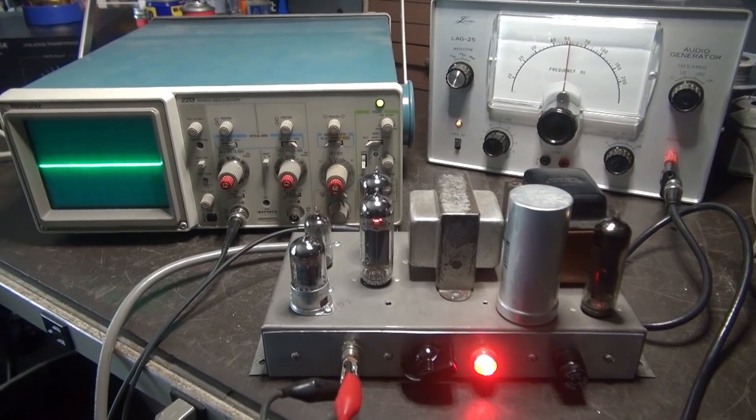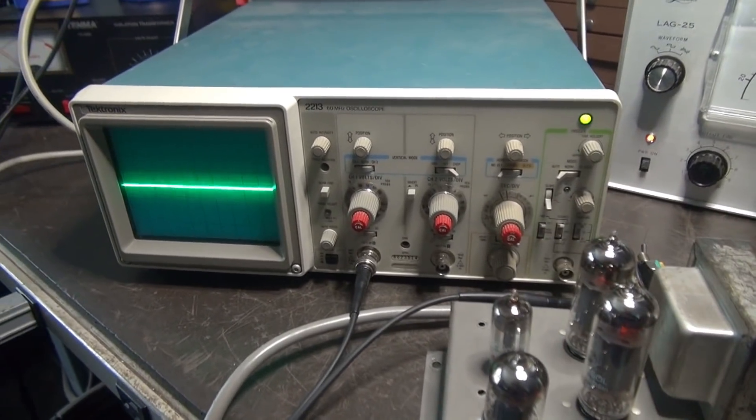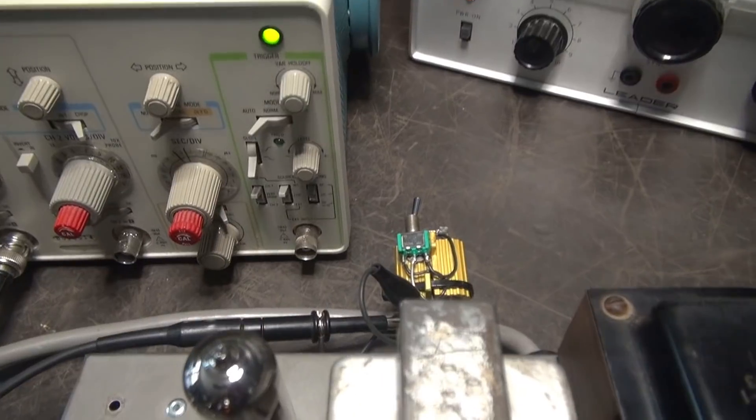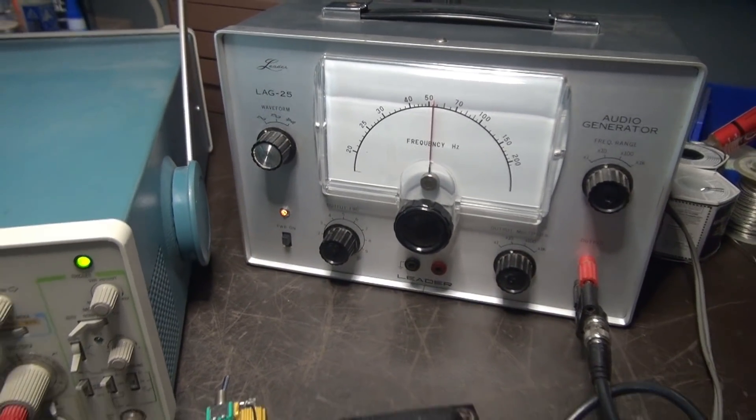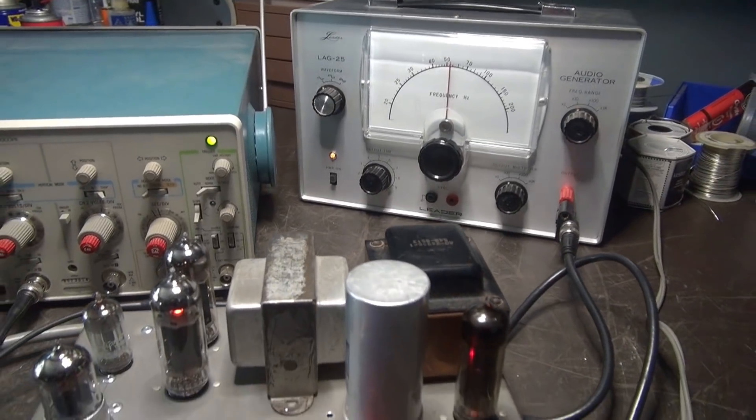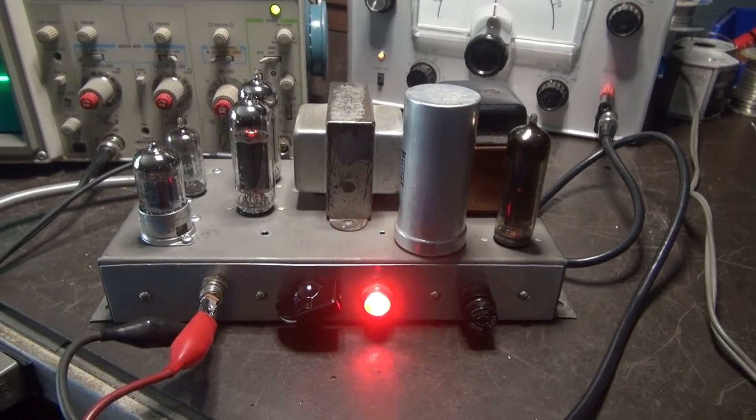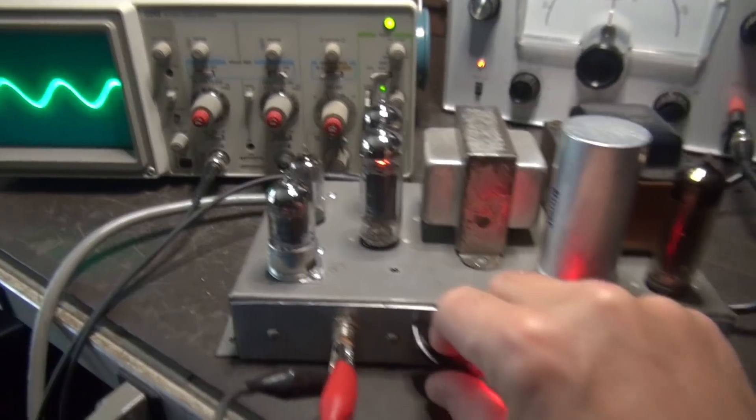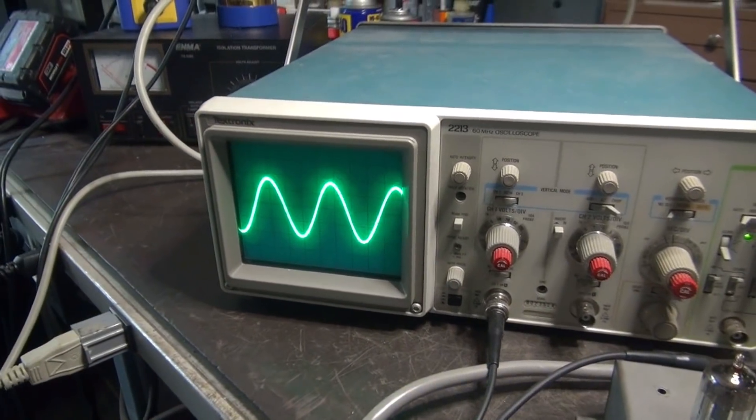Here's the initial test. I have my Tektronix oscilloscope monitoring the output across the dummy-loaded resistor. Leader audio generator as the input. We're set at about 500 Hz right now. Bring up the gain.